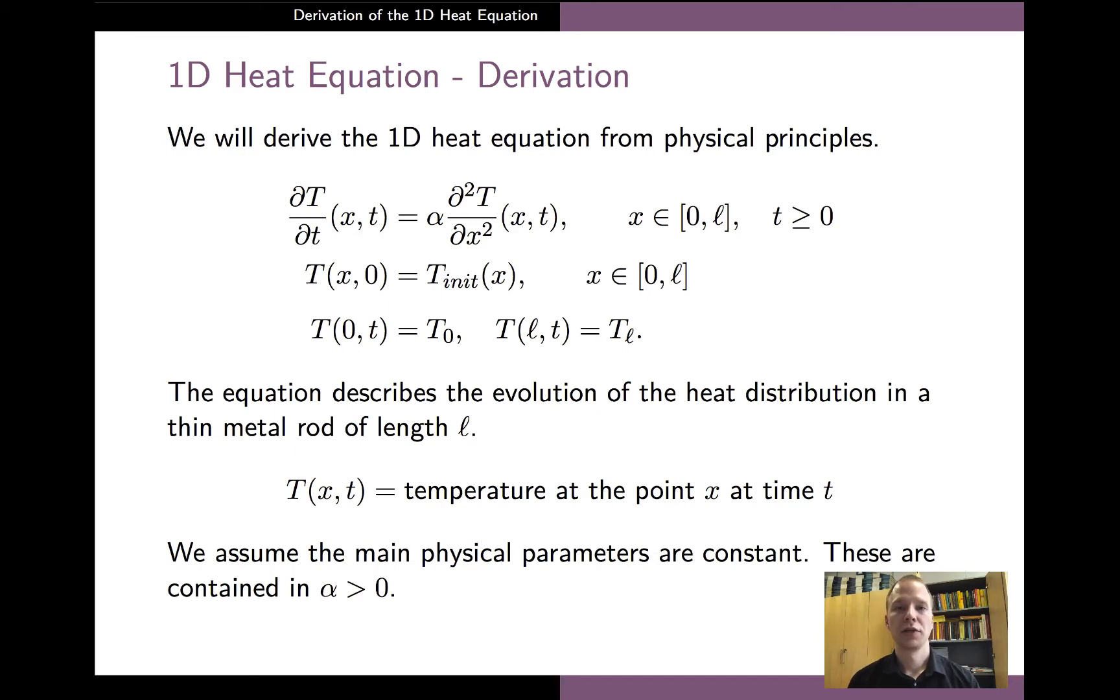The heat equation written down here can be used to, for example, describe the time evolution of the temperature profile in a thin metal rod of uniform properties and of length l. And in this interpretation, the unknown function T describes the temperature of the rod at each spatial coordinate x and at each time instant t.